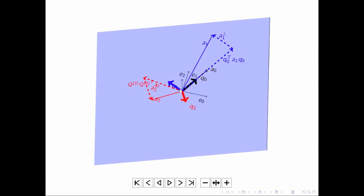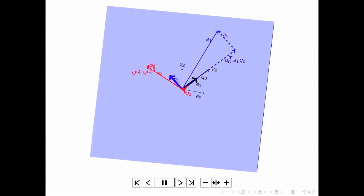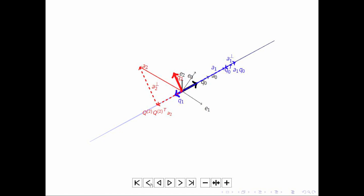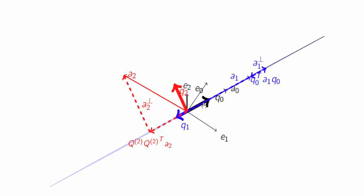q1 is a little hard to see because it's behind the blue vector. At that point, we have two vectors that span the same space as a0 and a1, except that they are mutually orthonormal. If we now rotate this picture, we can see that a2 is definitely not in the plane spanned by q0 and q1. We can compute the projection of a2 onto the space spanned by q0 and q1 by creating a matrix q^2 that has as its columns the vectors q0 and q1. This is the formula for the projection onto the space spanned by these two orthonormal columns.